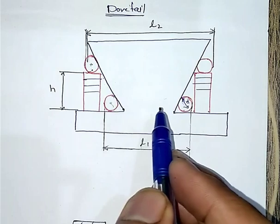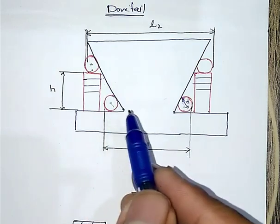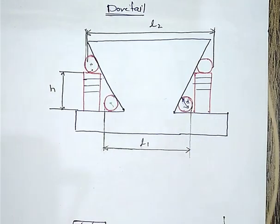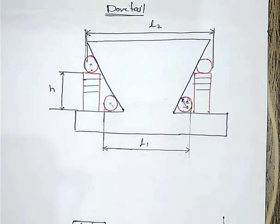So with these details, I can be able to find the angle of this particular dovetail shape component. For that purpose, I have to make some construction arrangement.